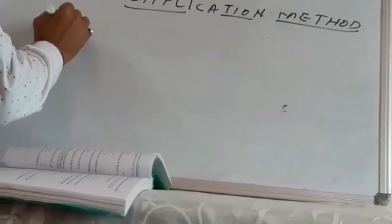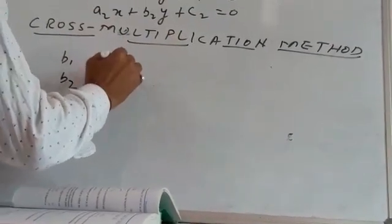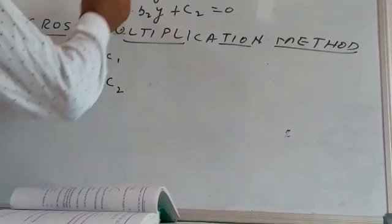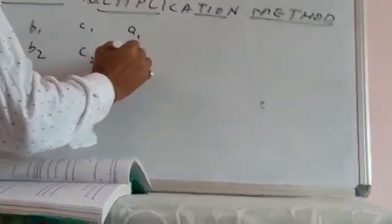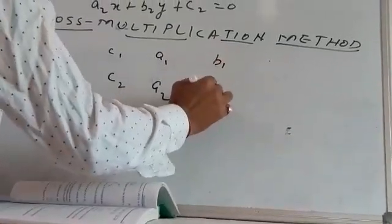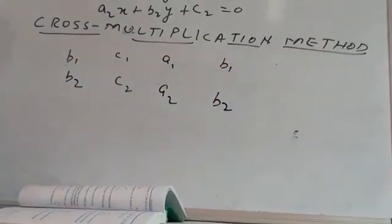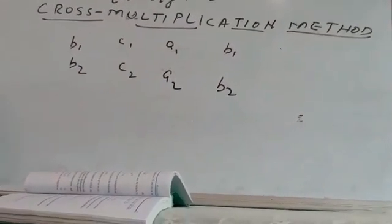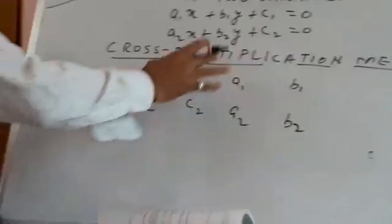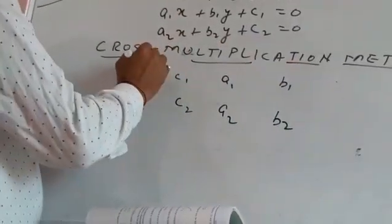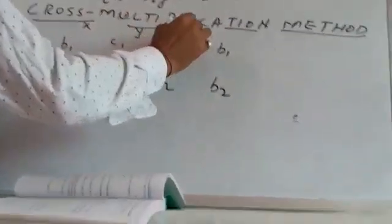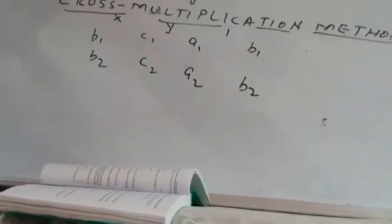First, we write the coefficient of y: b1, b2. Then the constant part: c1, c2. Then the coefficient of x: a1, a2. And again b1, b2. So remember — we start with b1, b2 and we end with b1, b2. The series you form here: write x, write y, and write 1.